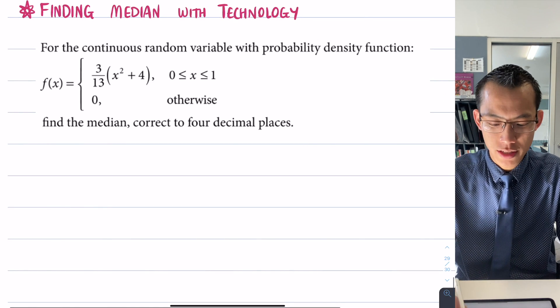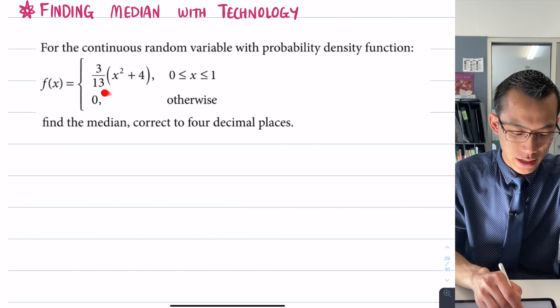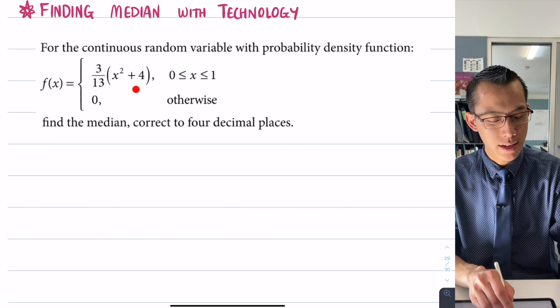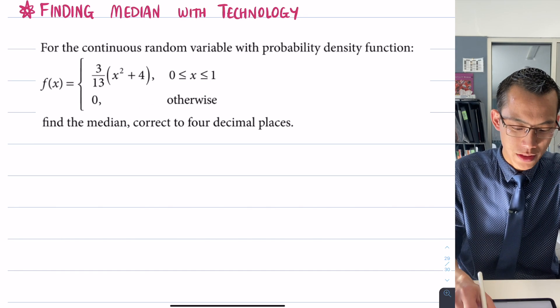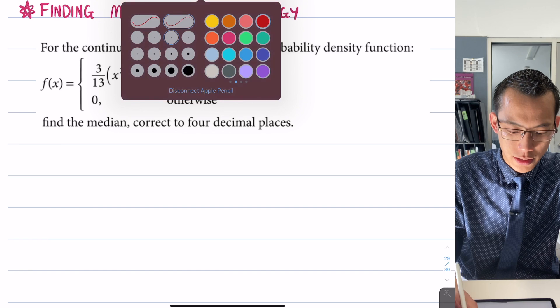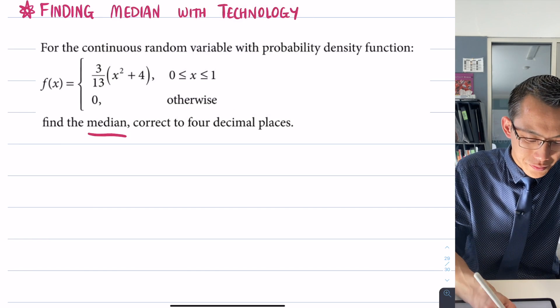This question starts off relatively simply. You've got a continuous random variable and the probability density function is given as f(x) = (3/13)(x² + 4) for 0 ≤ x ≤ 1. The question is to find the median, correct to four decimal places.